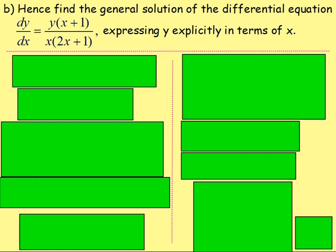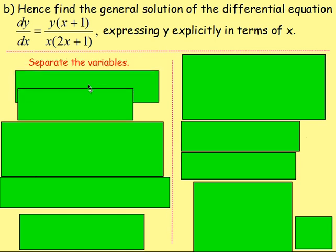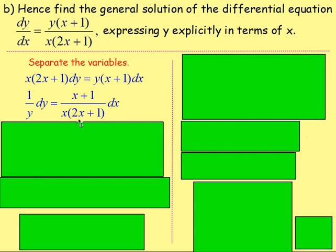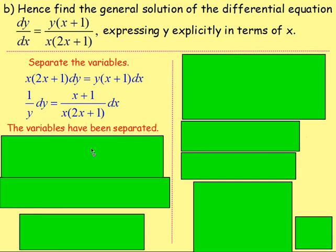Part b: hence find the general solution of dy/dx equals y(x plus 1) over x(2x plus 1), expressing y explicitly in terms of x. The first thing is to separate the variables. Move dx to the right-hand side and move x(2x plus 1) to the left-hand side by cross multiplying. Then divide both sides by y, giving 1 over y dy. And divide both sides by x(2x plus 1), leaving (x plus 1) over x(2x plus 1) dx. The variables have now been separated.